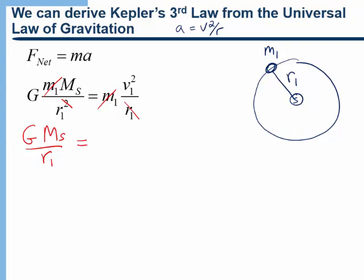But now I want to rewrite the velocity in terms of the period. Remember that for uniform circular motion, the velocity is equal to the circumference of the orbit divided by the period. So the distance it goes around in one revolution divided by how much time it takes to go around one revolution. And so I'm going to square that when I plug it in here. I get 4π² r1² over T1².